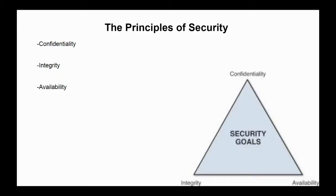The three principles of security are confidentiality, integrity, and availability. Confidentiality prevents the disclosure of information to unauthorized people, resources, or processes. Integrity refers to the accuracy, consistency, and trustworthiness of data. And finally, availability ensures the information is accessible by authorized users when needed. Use the acronym CIA to remember these principles.